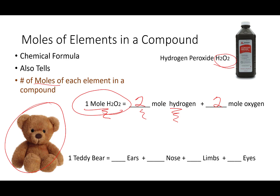In the teddy bear, I can have parts of him that are multiples. So in one teddy bear, he can have two ears, one nose, four limbs — if we use his cute little feet and his hands — and two eyes. The whole might be just one, but individual pieces can be more than one.